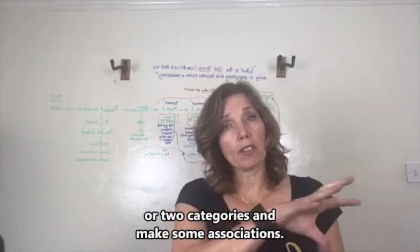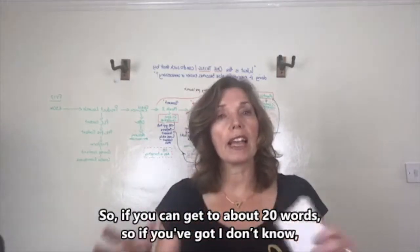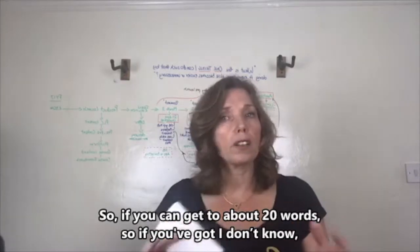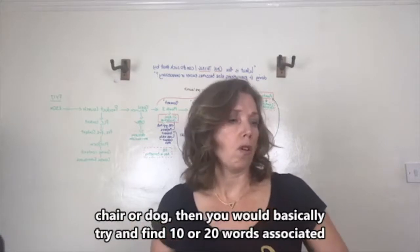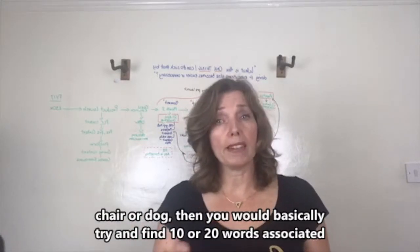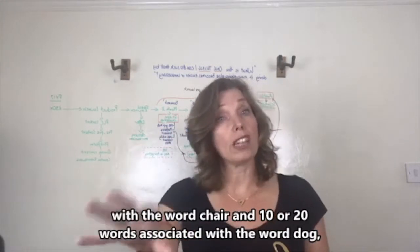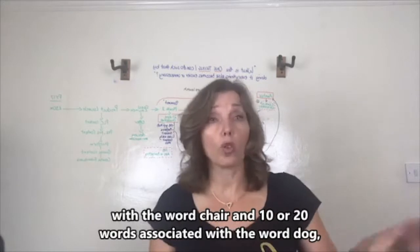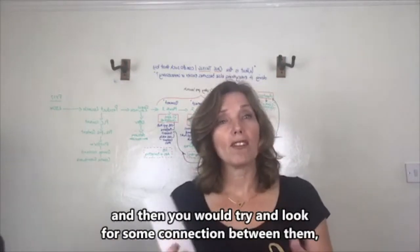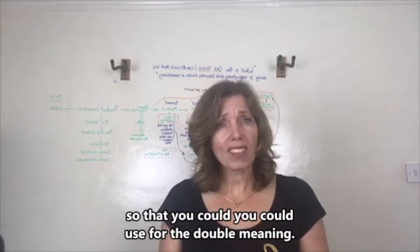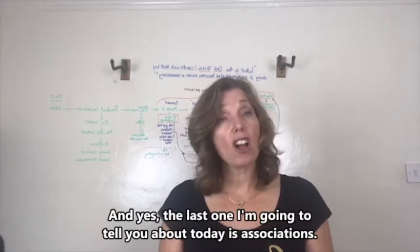The technique for these ones is to find two nouns or two categories and make some associations. Try to get to about 20 words with each. If you've got a noun—I don't know, chair or dog—you would try and find 10 or 20 words associated with the word chair and 10 or 20 words associated with the word dog, and then you would look for some connection between them that you could use for the double meaning.